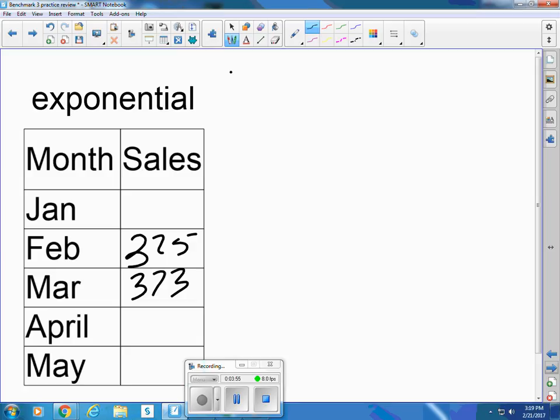To find exponential equations increase by the same percentage each time. To find out what the percentage increase is, we say 373 divided by 325. So that is an increase of 15%.